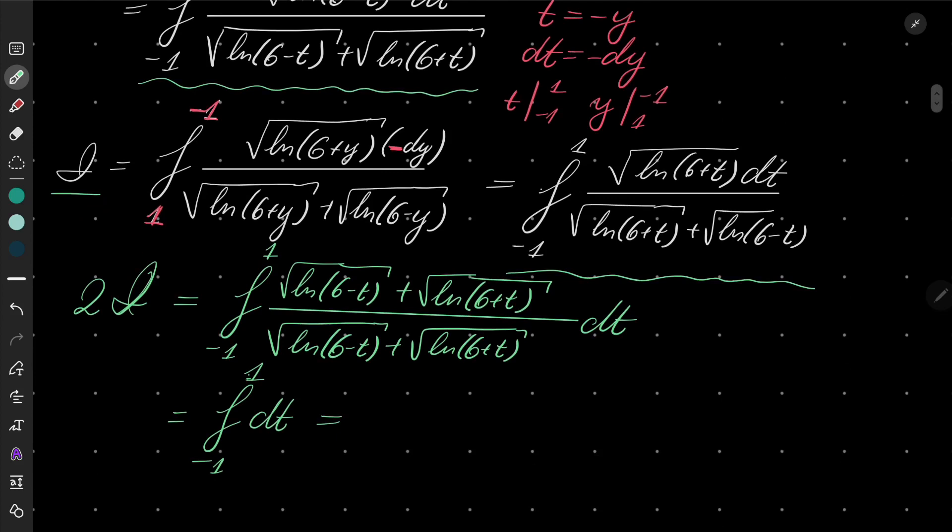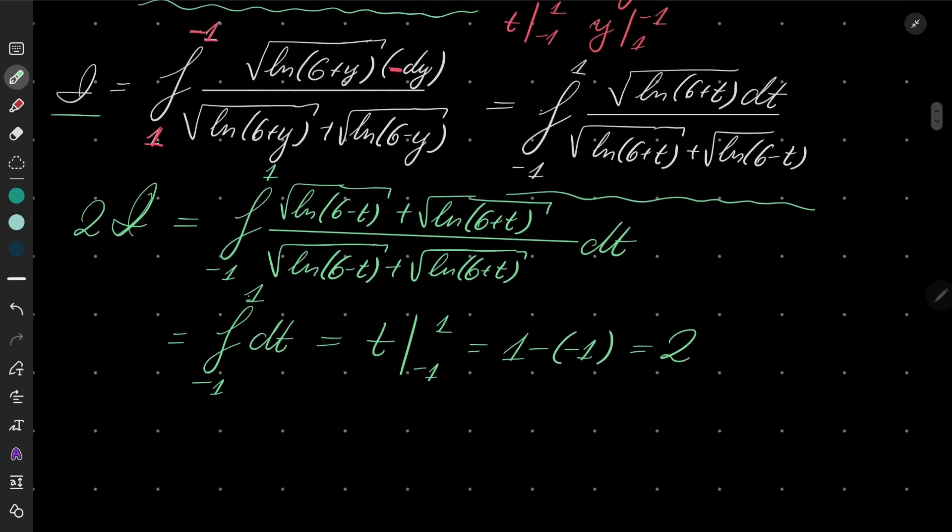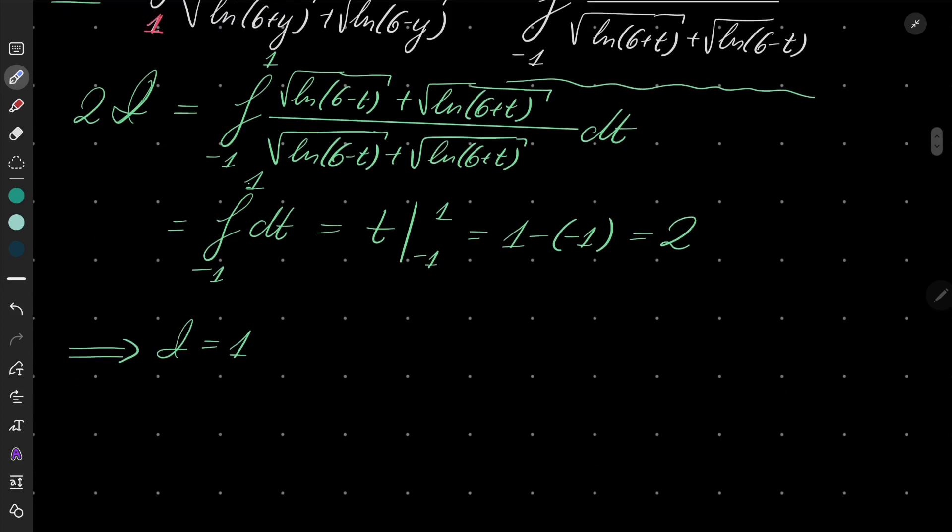And it's just t evaluated from minus 1 to 1. So it's 1 minus minus 1, which is 2. So we know that twice our integral equals 2, which implies that our integral is 1. And we have our answer.